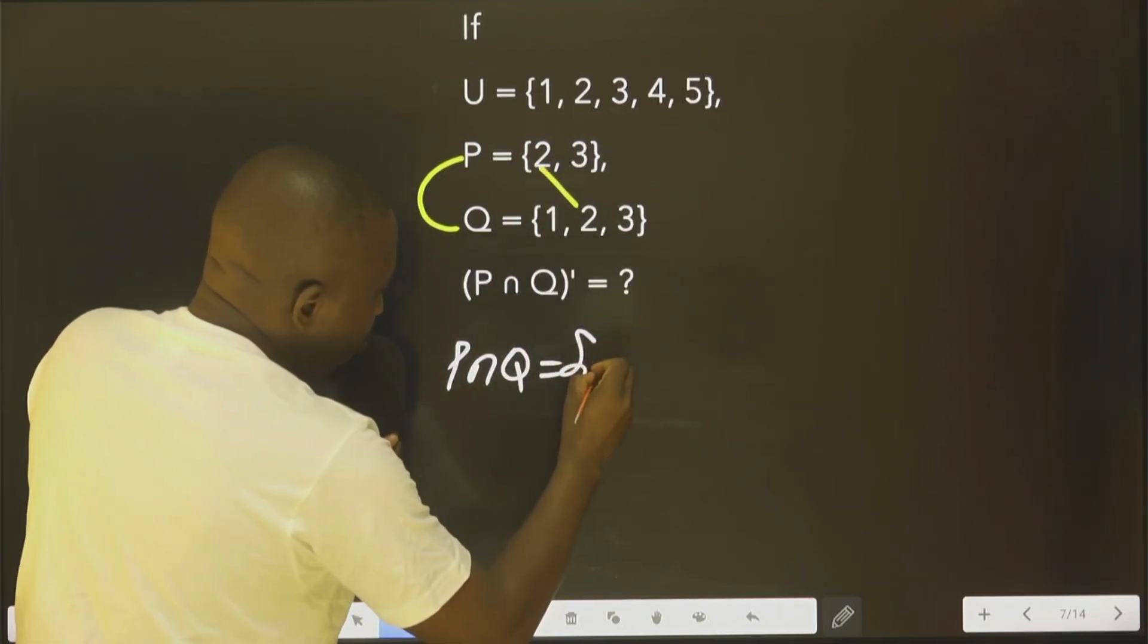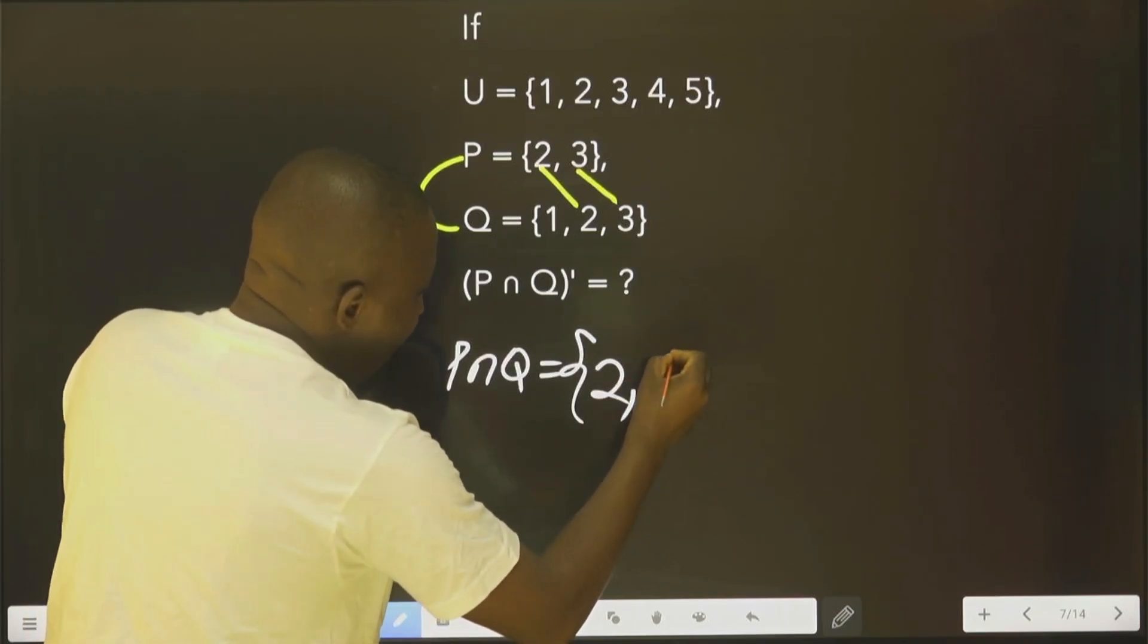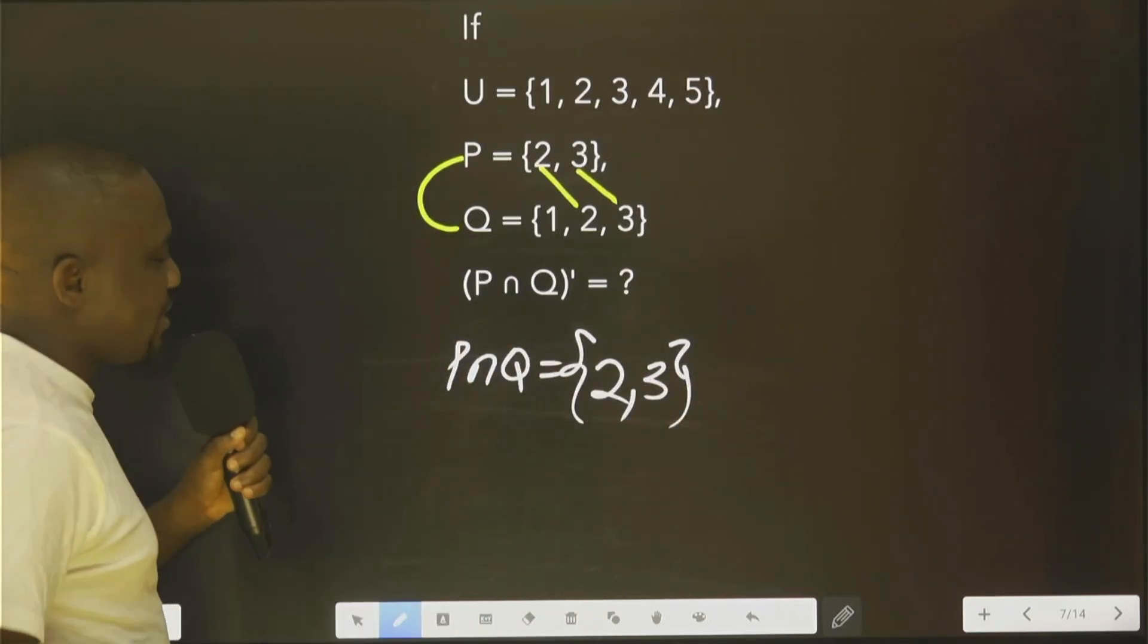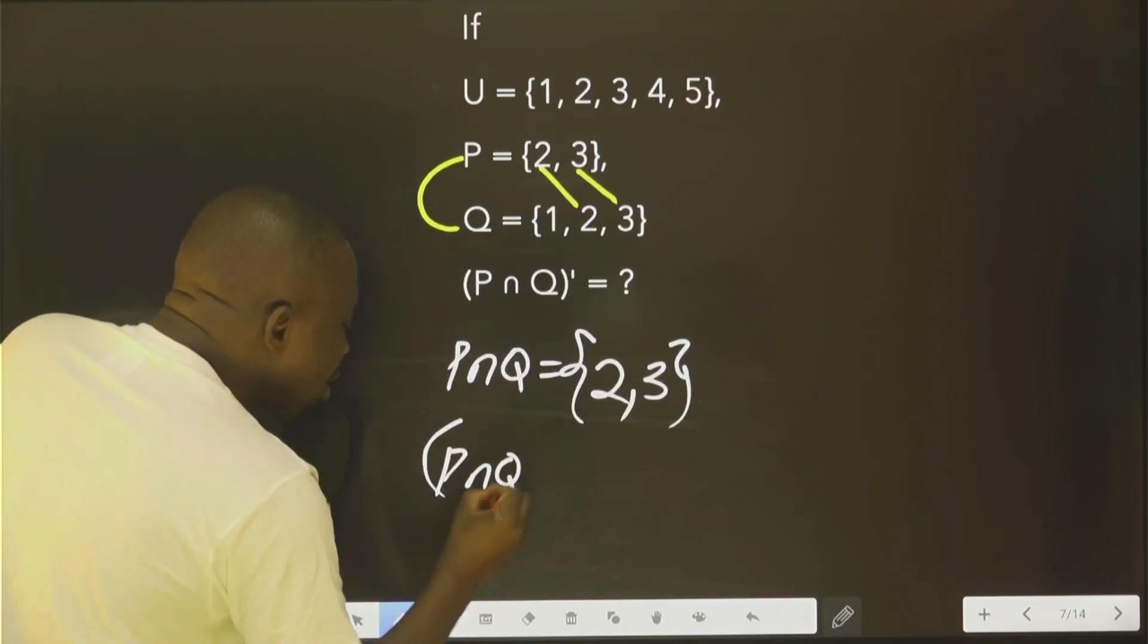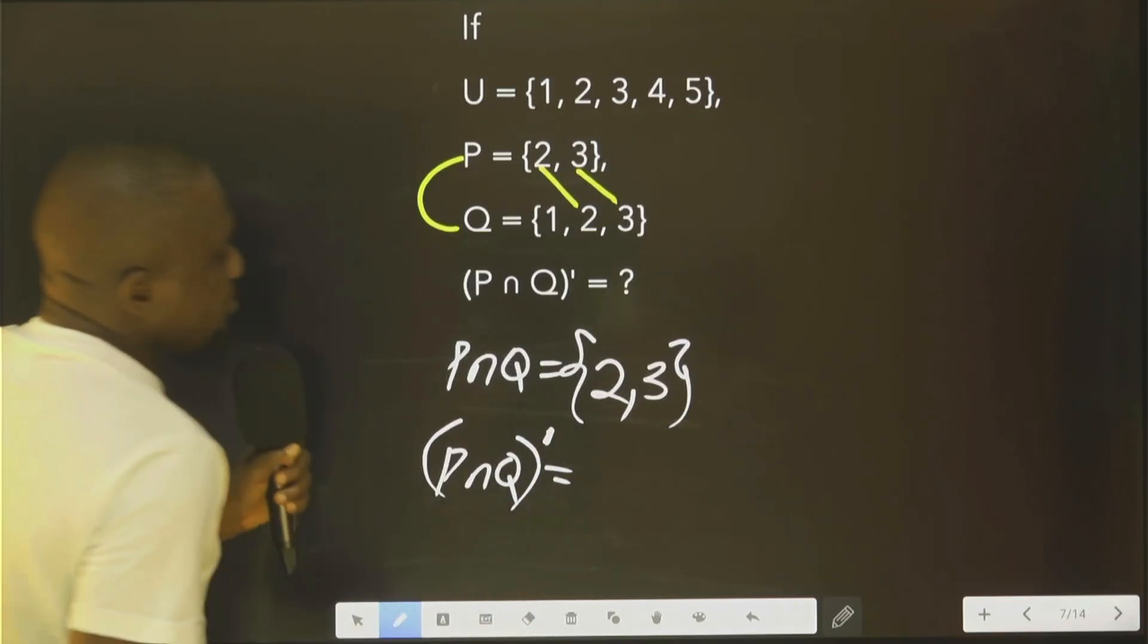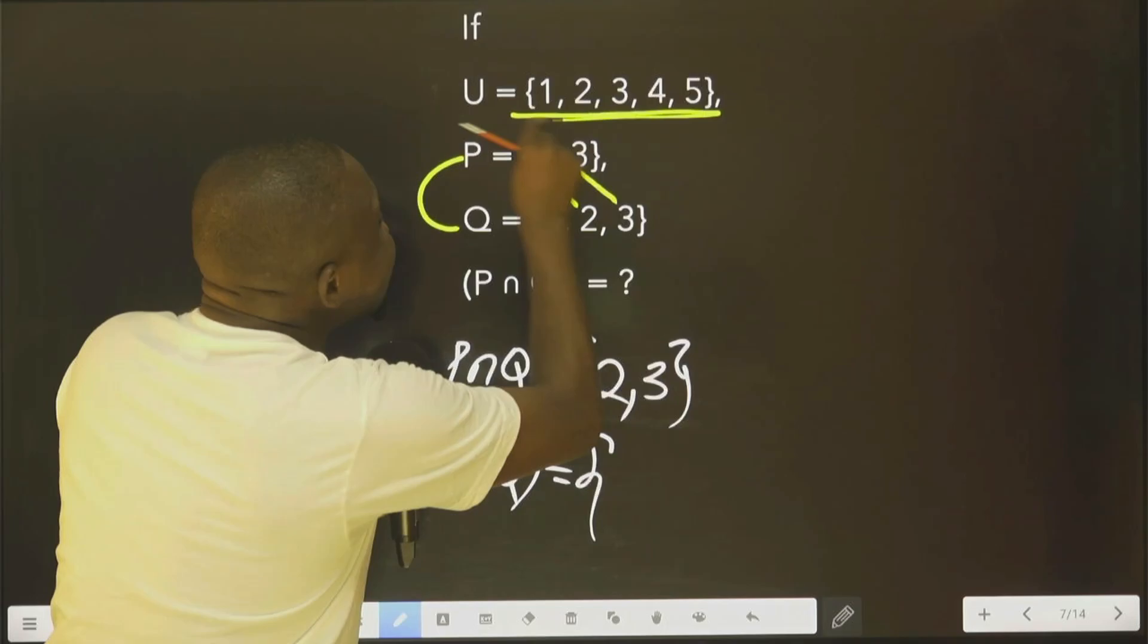see, 2 and 3—both of them are in the two sets. Now the question says, find the complement of this intersection. The complement, that is what is in this universal set that